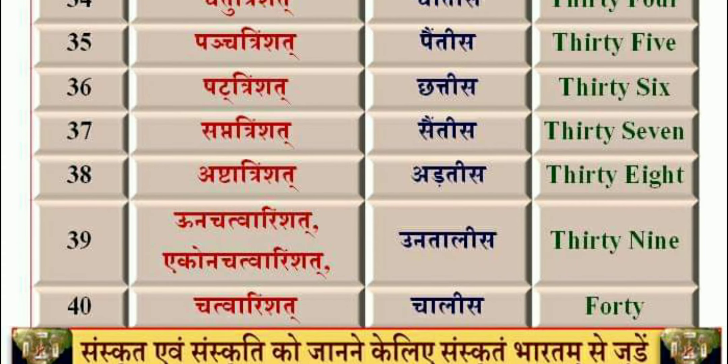Sapta Trimsati — 37. Ashta Trimsati — 38. Oona Chattva Trimsati, or Ekona Chattva Trimsati — 39.